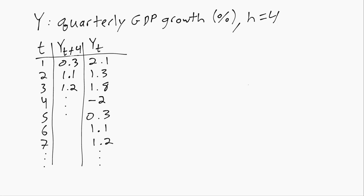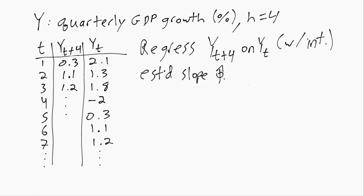Then what we do is we just run a regression of yt plus four or generally yt plus h on yt, making sure to include an intercept term in that regression. And that will give us our estimated slope phi hat one and our estimated intercept phi hat zero.